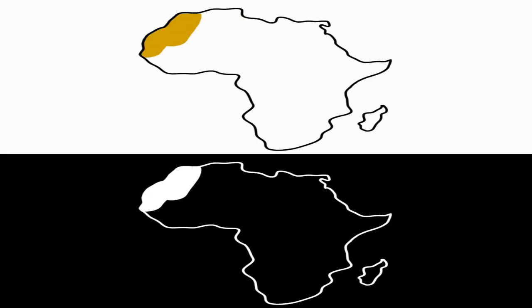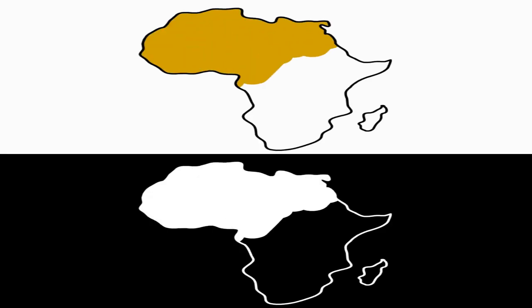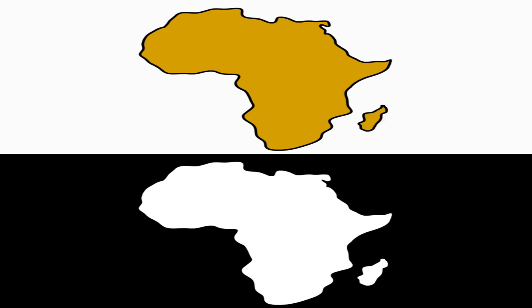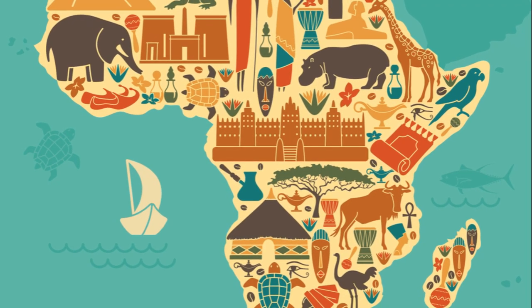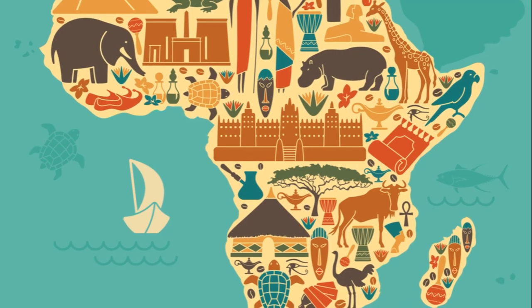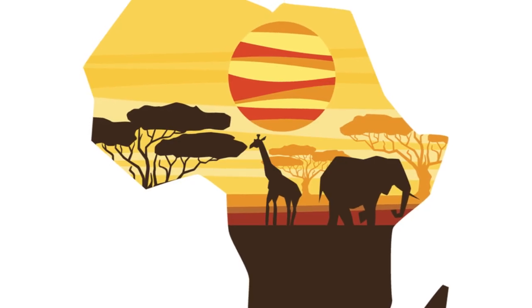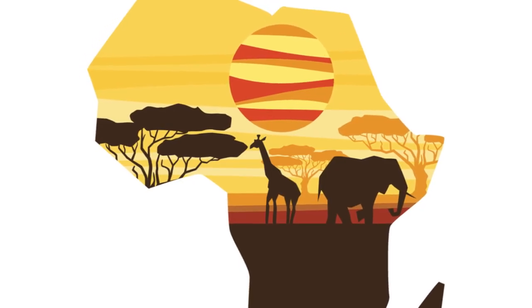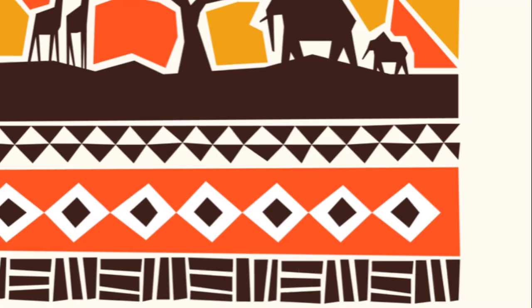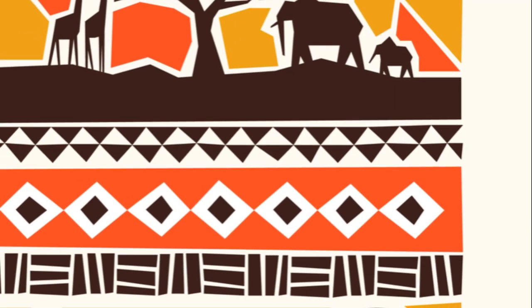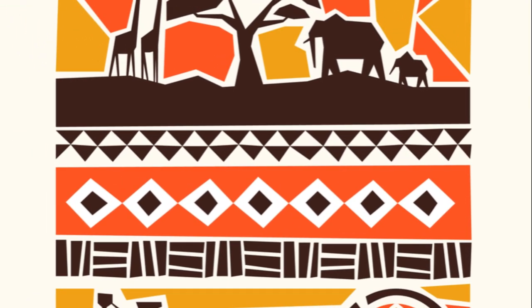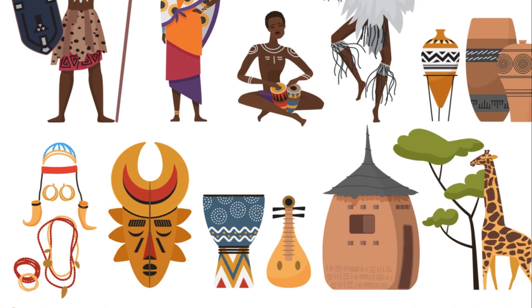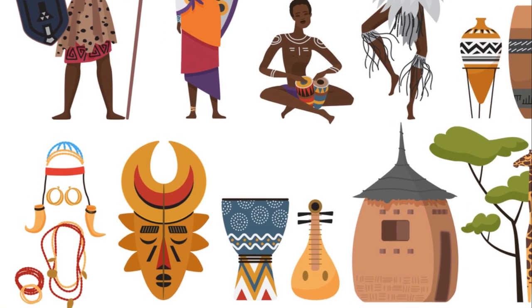The phrase Sub-Saharan Africa was first used in the late 19th century by European explorers and colonizers. They used this term to separate the African continent into two distinct parts. The northern part, which was predominantly Arab and Muslim, was considered more civilized, while the southern part — Sub-Saharan Africa — was deemed primitive and undeveloped.